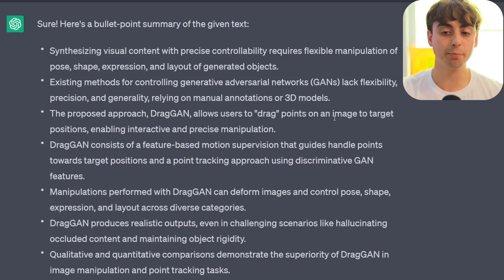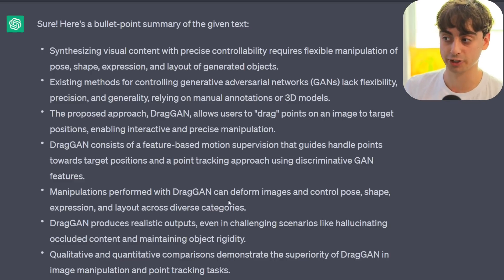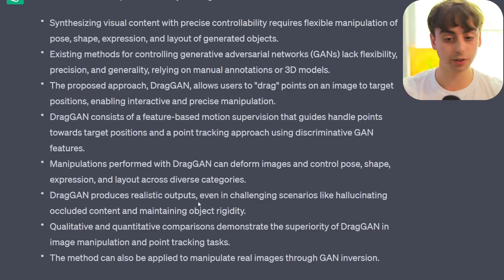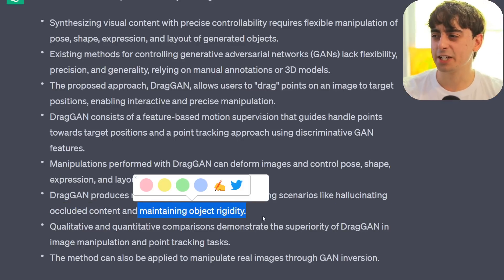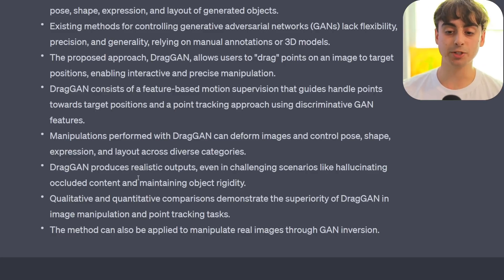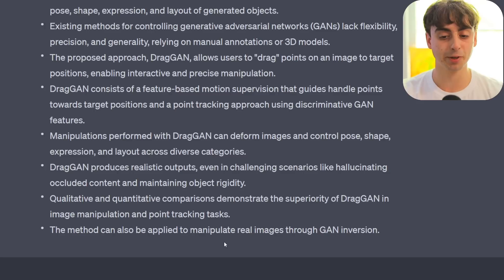Drag-GAN allows users to drag points on an image to target positions, enabling interactive and precise manipulation. Manipulations performed with Drag-GAN can deform images and control pose, shape, expression, and layout across diverse categories. Drag-GAN is able to produce realistic outputs even in challenging scenarios, like hallucinating occluded content and maintaining object rigidity — fancy words for generating new content that wasn't there before and maintaining coherency. This method can also be applied to manipulate real images that have already been taken, through GAN inversion.